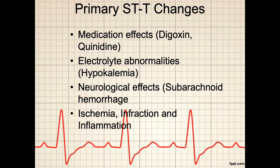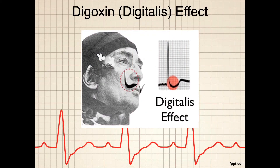Sometimes the characteristics of the ST segment changes help us determine why those changes are being caused. In this case, we notice the digitalis effect and the characteristic curve of the ST segment, which looks vaguely like a fancy mustache. We look at a portrait of Salvador Dali and see his mustache, and it should remind us of the digitalis effect.